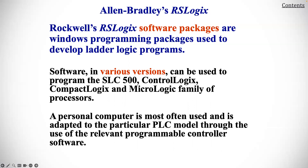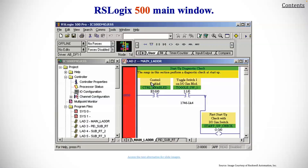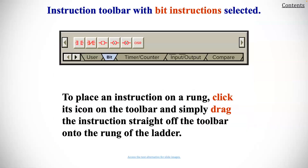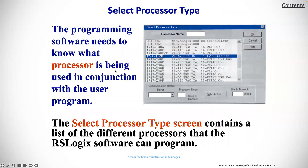A personal computer is most often used and is adapted to a particular PLC model through the use of the relevant programming controller software. Here's an example of what it would look like — the RSLogix 5000 main window in Windows. The instruction toolbar with a bits instruction is selected; to place an instruction on a rung, click its icon in the toolbar and drag it straight onto the rung of the ladder.